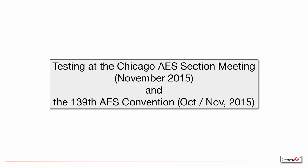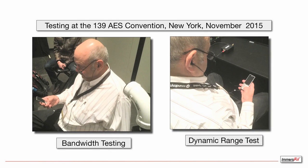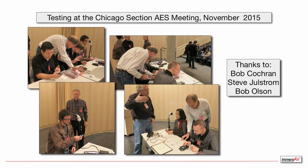We did some testing at the Chicago AES section meeting and also at the 139th AES convention in October/November 2015. Here are example pictures of people doing the bandwidth and dynamic range tests. Things are organized so that the person can run their own test, and if they wish they can report the results or keep them to themselves. In Chicago we had more time and more equipment, held in the S.N. Shure Theater at Shure, where various people took either the bandwidth test or the dynamic range test.